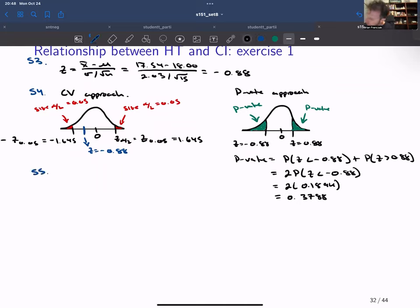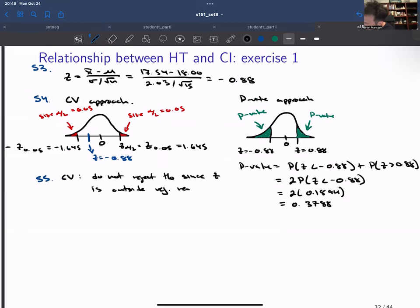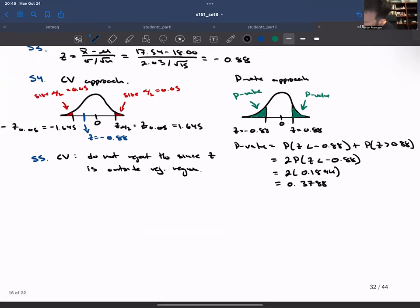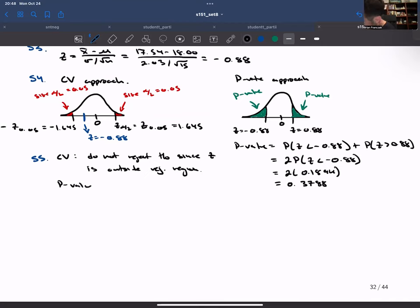So now on step five, if I take the critical value approach, I would say do not reject H0 since z is outside the rejection region. If I take the p value approach, I would say do not reject H0 since the p value is bigger than alpha.